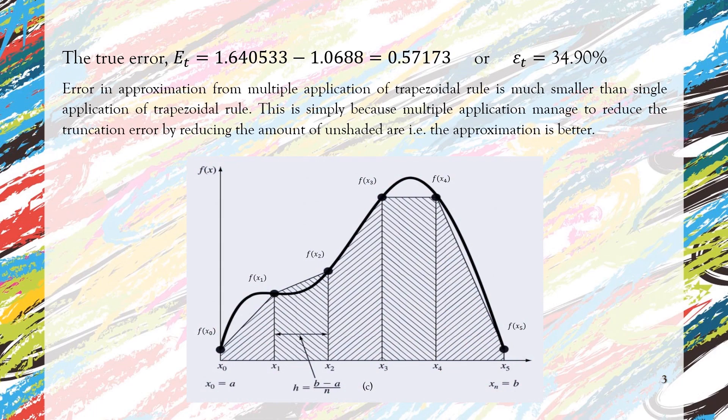So we can understand that when we apply the multiple application of trapezoidal rule, we reduce the size of the unshaded area or the truncation error can be easily said reduced, as can be seen in the figure below. So we can say easily that the multiple application of trapezoidal rule improves the approximation of the trapezoidal rule with single application.